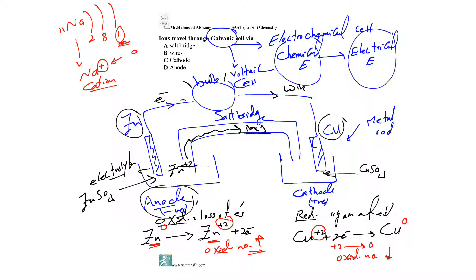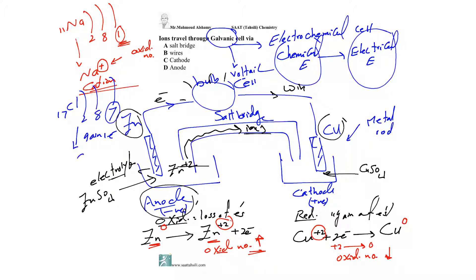The opposite applies to chlorine (Cl, atomic number 17). Its electron shells are 2, 8, and 7. To reach the octet rule and become stable, the chlorine atom gains one electron, becoming Cl⁻. The oxidation number here is negative one, and this ion is called an anion or chloride ion.